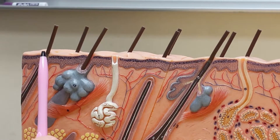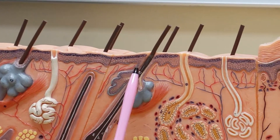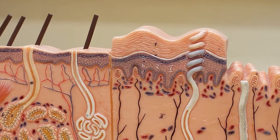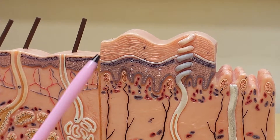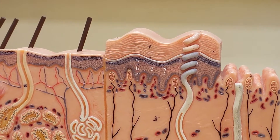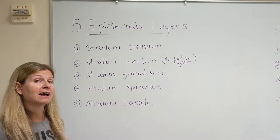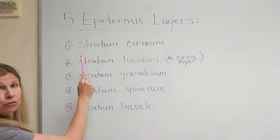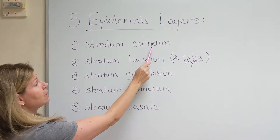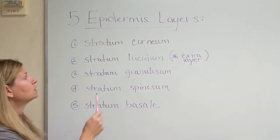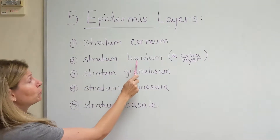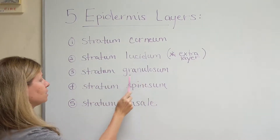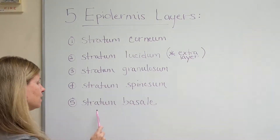Let's discuss the first layer of the skin in detail — the epidermis, otherwise known as your outer layer. You can have four or five layers depending on if it is thick skin or not. The thick skin's extra layer is found in the soles of our feet and the palms of the hand. The five layers of the epidermis are: the stratum corneum, the stratum lucidum — the extra layer found in thick skin only — followed by the stratum granulosum, stratum spinosum, and the stratum basale.